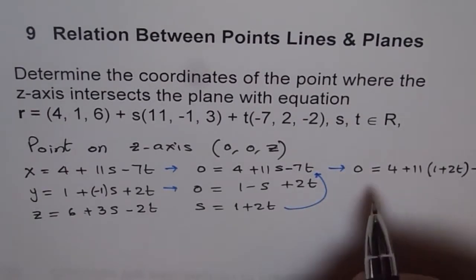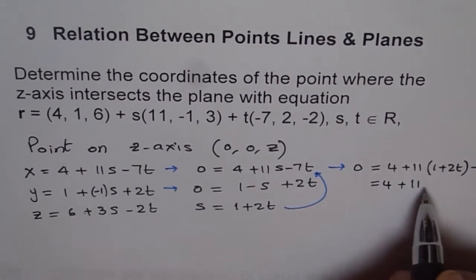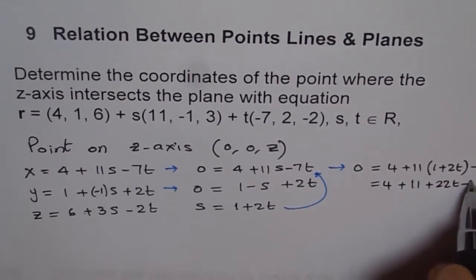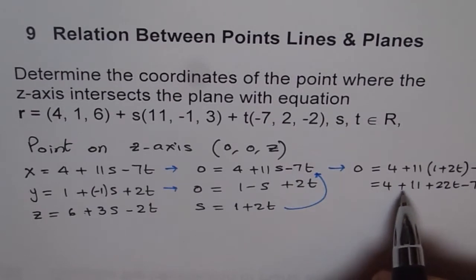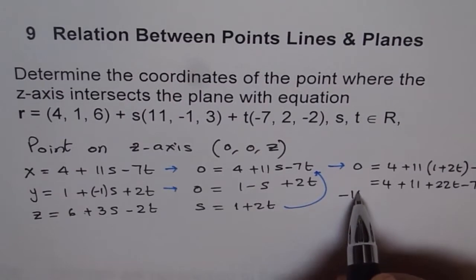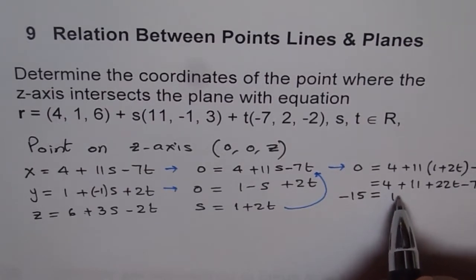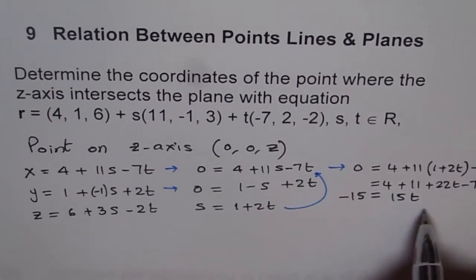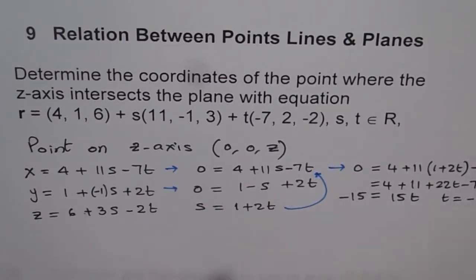Now we will try to solve this. So we get here 4 plus 11 times 1 is 11 plus 22t minus 7t. So 22 minus 7, and we will bring these two terms here, 4 plus 11. So 4 plus 11 is 15 which comes here becomes minus 15, and 22 minus 7 is 15. So it is plus 15t and therefore we get t equals to minus 1.